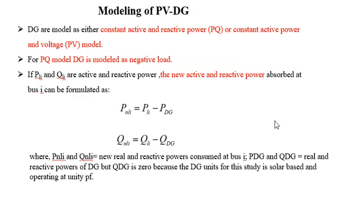Here is the modeling of PV-DG. DG is modeled as either PQ or PV, depending on the type of DG and inverter technologies. PV-DG is modeled as a PQ load, equivalent to a negative load. The new active and reactive load equals the old load minus the active and reactive size of the DG.